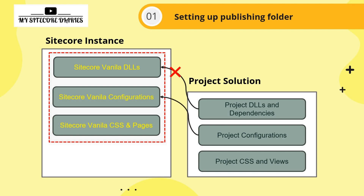Another thing is vanilla configuration. There are cases where you need to change the configuration, but you should not directly change the vanilla configuration files. It should be done via patch files. That way, when you go to upgrade, it is simple and easy to separate out your project configuration. Any configuration changes must be done via patch configuration.